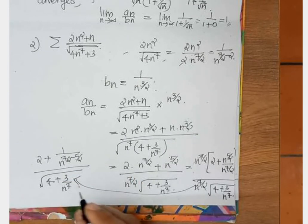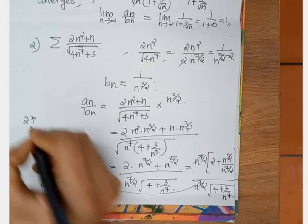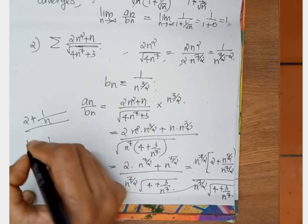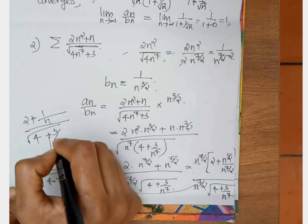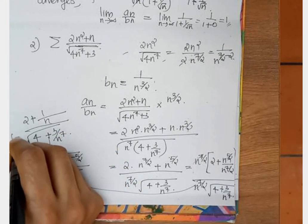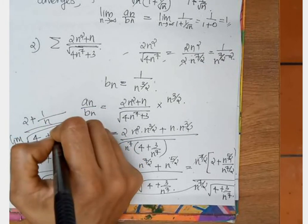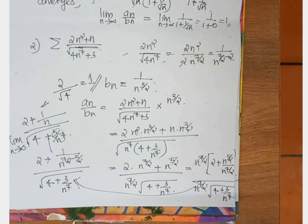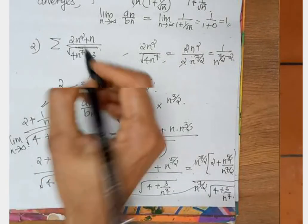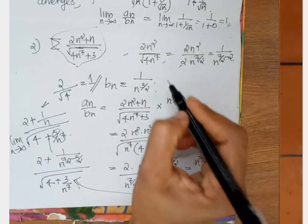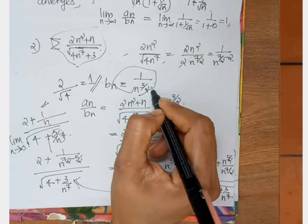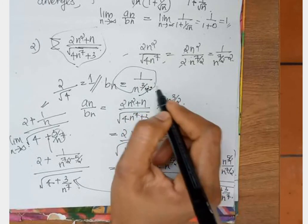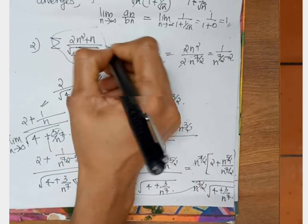Taking the limit as n tends to infinity, 1/n and 3/n⁷ both go to 0. So the answer is 2 divided by root of 4, which equals 1. This is a finite positive value, so we can say this series converges or diverges together with bₙ. Since bₙ is of the form sigma 1/n^p with p = 3/2, which is greater than 1, this series converges. Therefore the original series also converges.